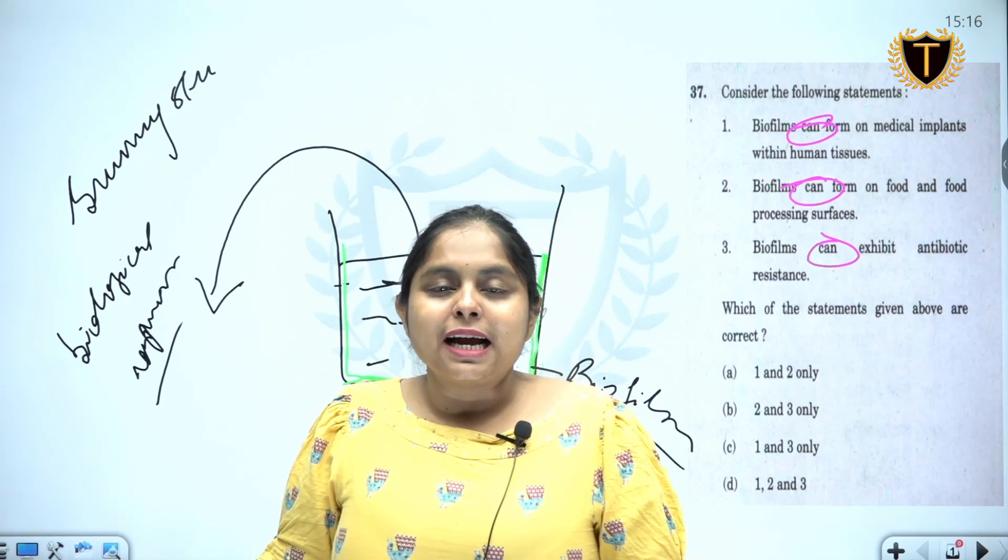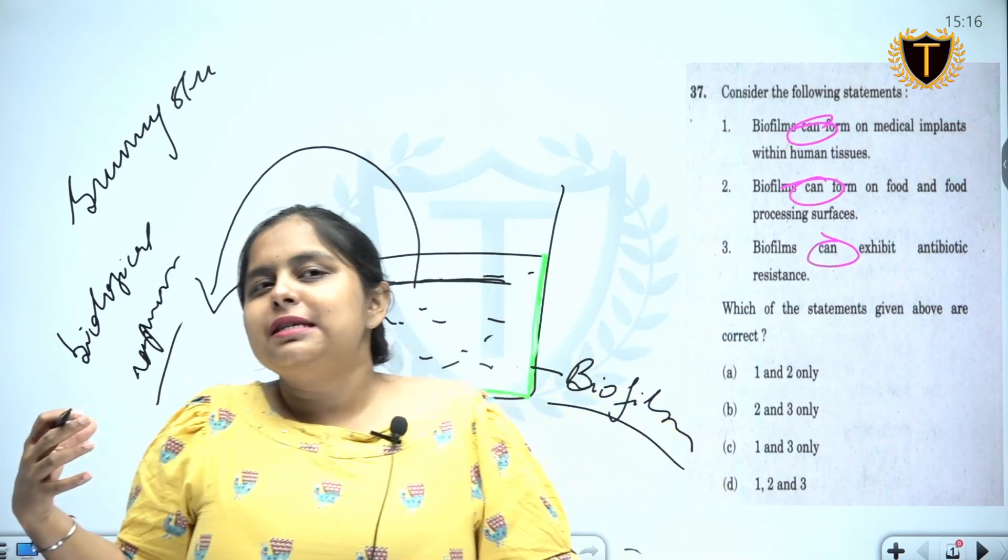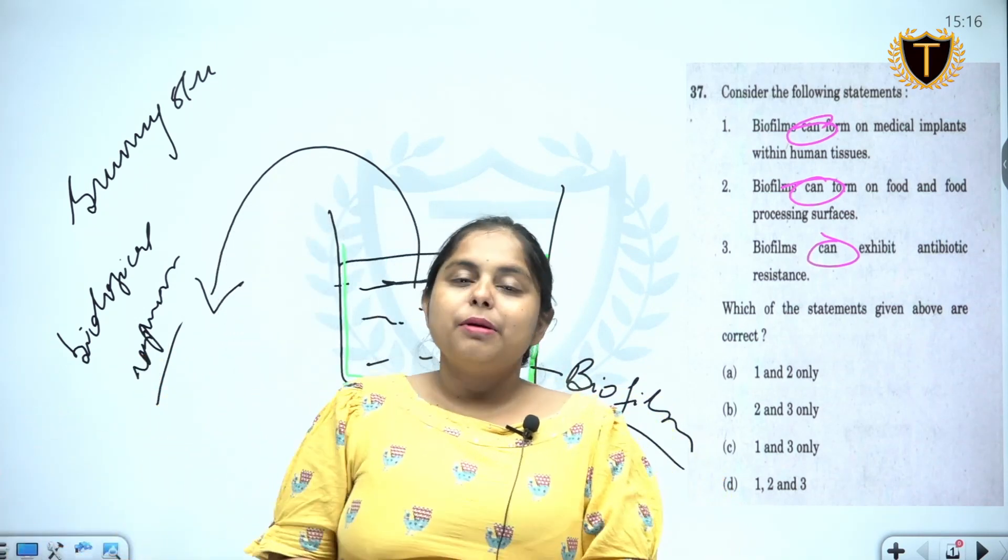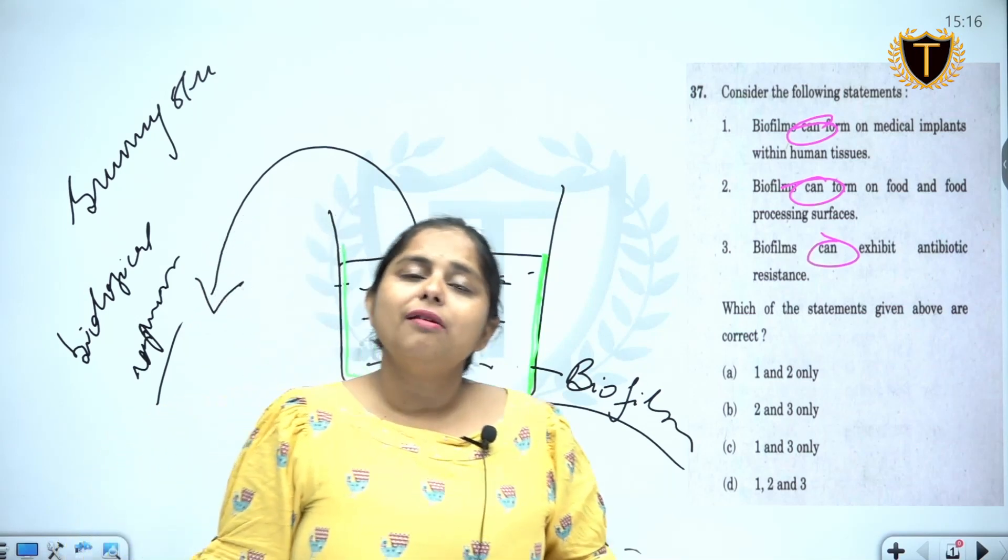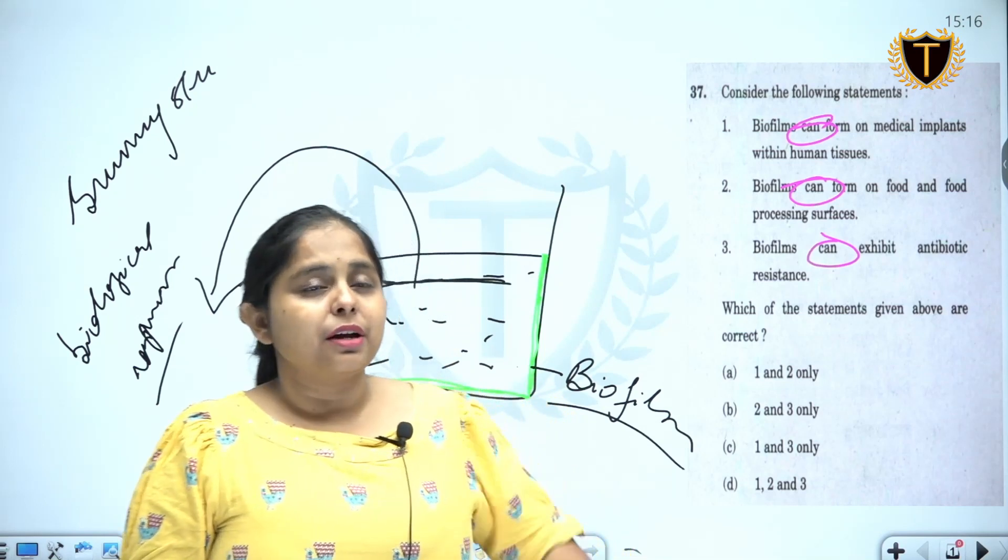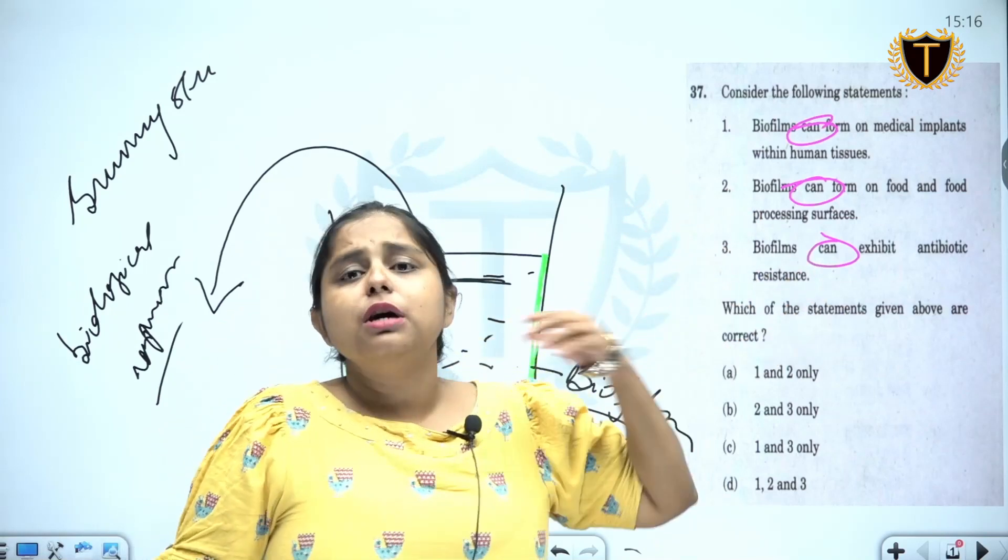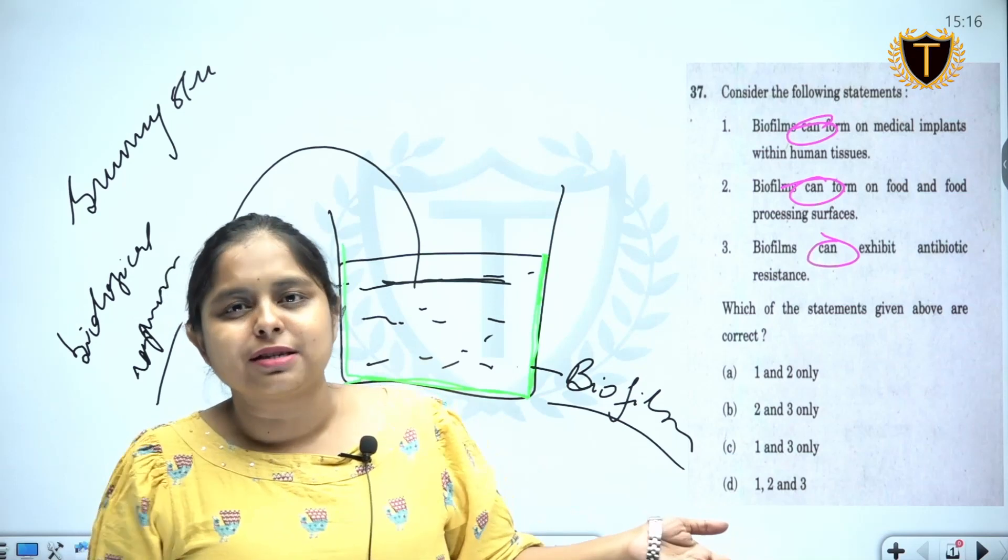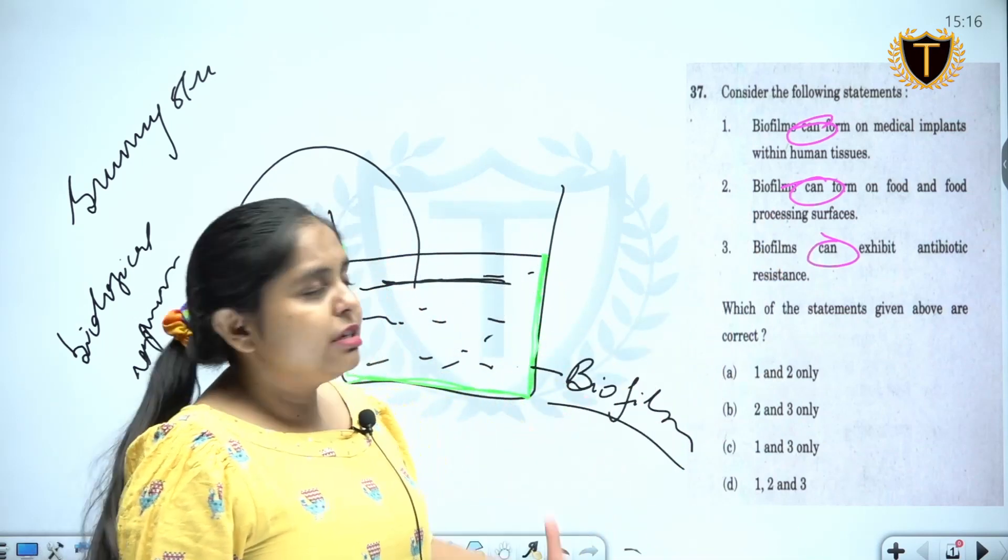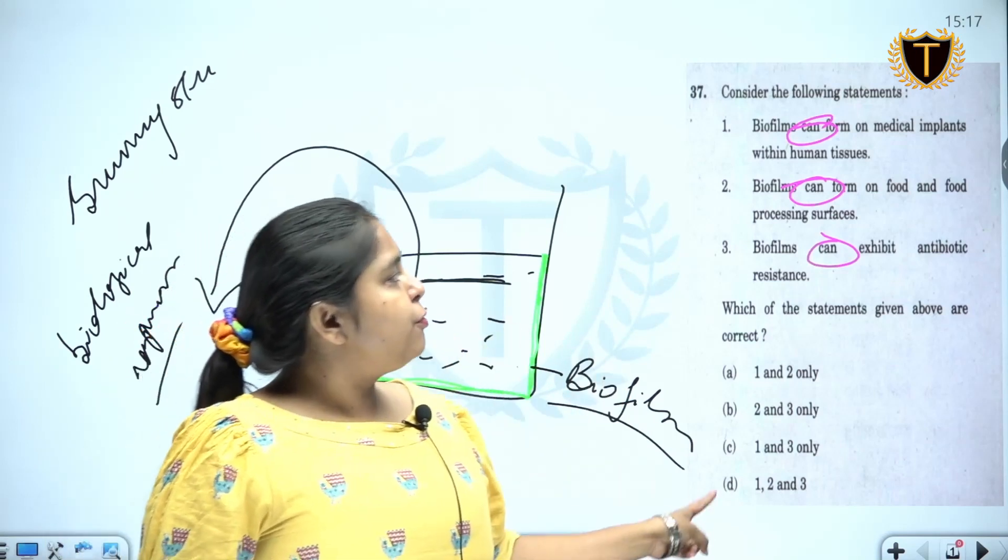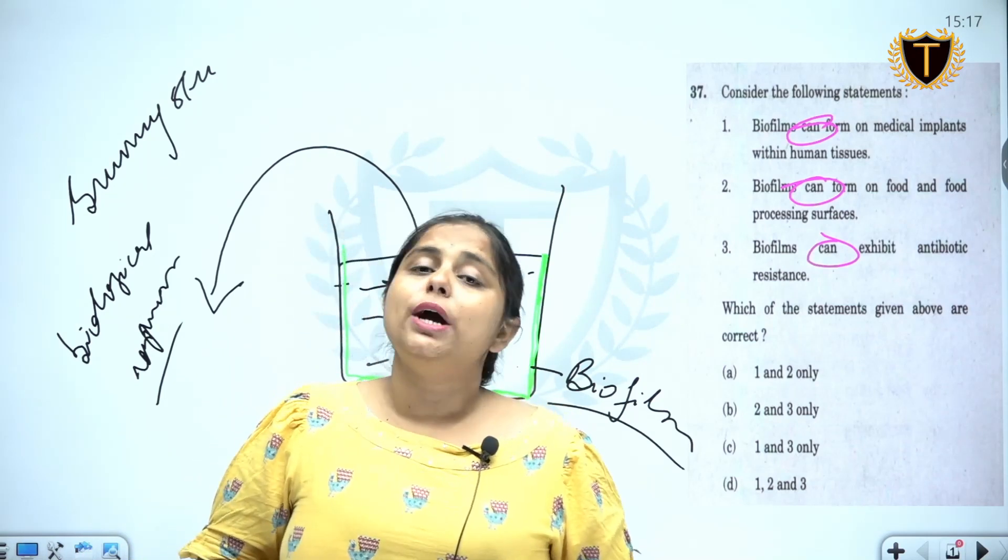Because in biology, in science and technology, or when we are talking about upcoming technologies, UPSC generally has a never-say-never attitude because it will generally find something which will have a more diverse application or in which research is due and eventually we will come up with something which will fulfill those conditions. Coming back to 'can form on medical implants within human tissues' - of course they can, because human tissues have excellent substrates. Each microorganism is going to have one nice party when they come to human tissue. So yes, that is possible. Can be formed on food and food processing surfaces - as I said, it can form on all surfaces which have any exposure to any form of moisture.